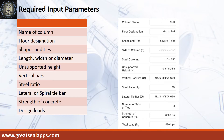Vertical bars: 3/4 inch diameter at grade 60. Steel ratio: 2%. Lateral tie bars: 3/8 inch diameter at grade 60. Strength of concrete: 6000 psi. And total load: 680 kips.